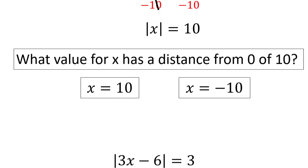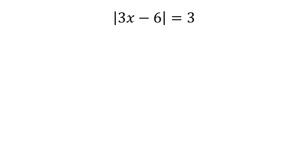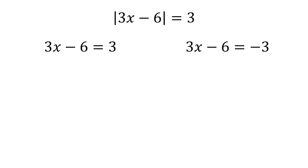Let's try another one. Consider the absolute value of 3x minus 6 is equal to 3. Thinking of absolute value as the positive function, the outcome of 3x minus 6 could either be positive 3 or negative 3, and either way that would satisfy our equation.